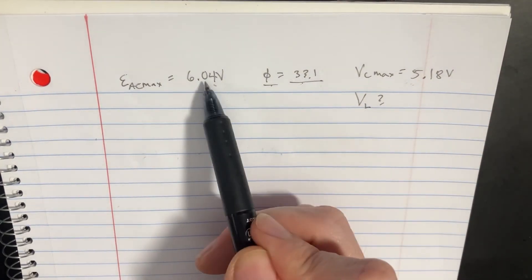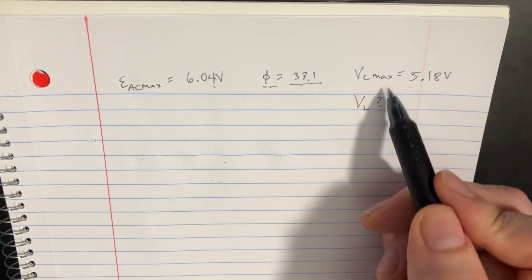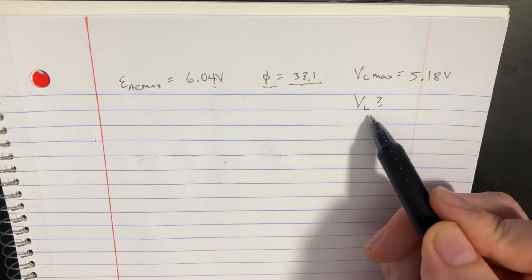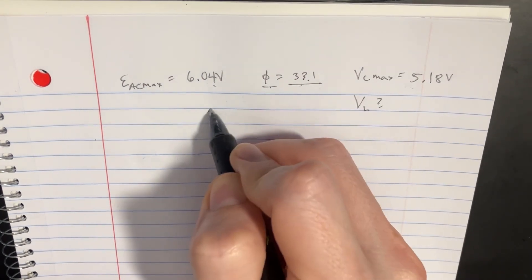We've got a generator providing us with a constant voltage. We have a phase angle of 33 degrees. We know the voltage across the capacitor, and we're trying to find the voltage across the inductor. We'll set this up. It's actually really easy.